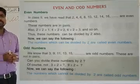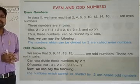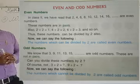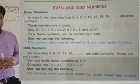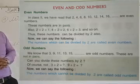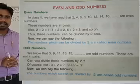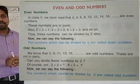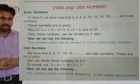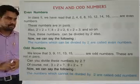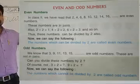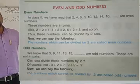Even numbers are the numbers which are divisible by 2. If we start from 2: 2, 4, 6, 8, 10, 12, and so on — these are all even numbers. Odd numbers are the numbers which are not divisible by 2.